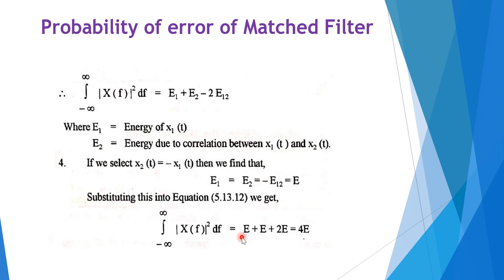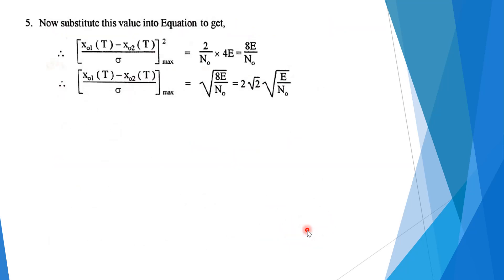By substituting these values, the integration gives E + E + 2E = 4E. Substituting back into the SNR equation, the maximum signal to noise ratio is 2/N0 times 4E, which equals 8E/N0. Taking the square root gives 2√2 times √(E/N0).